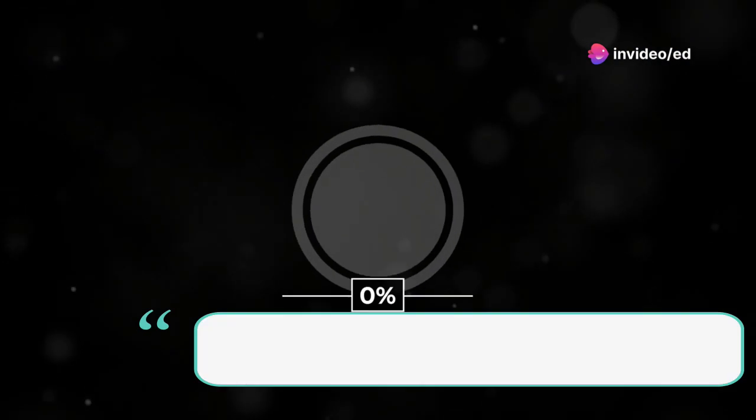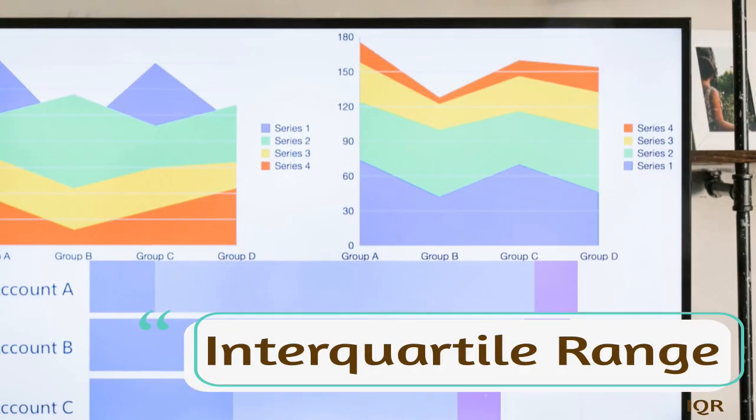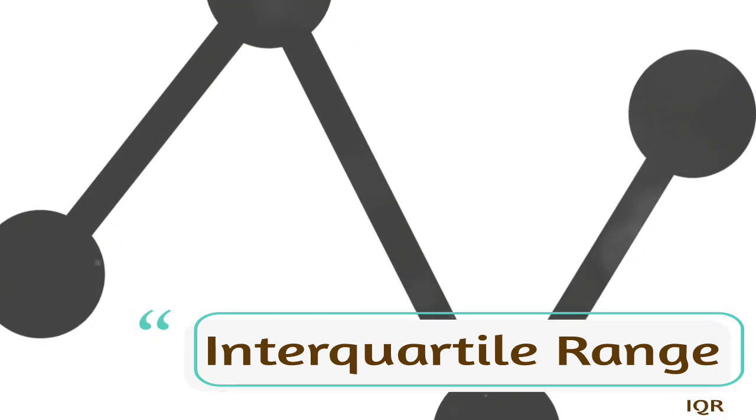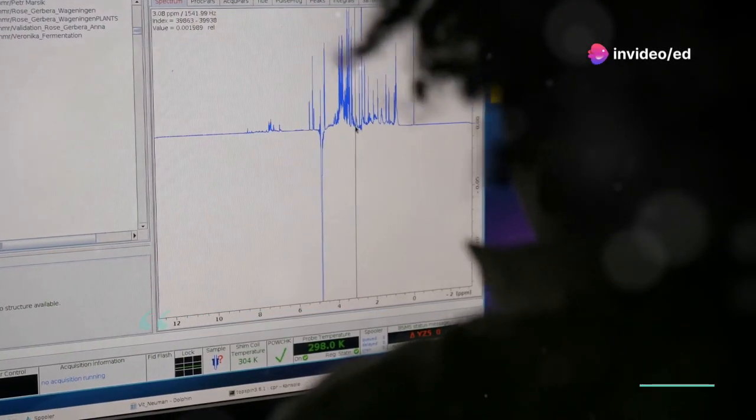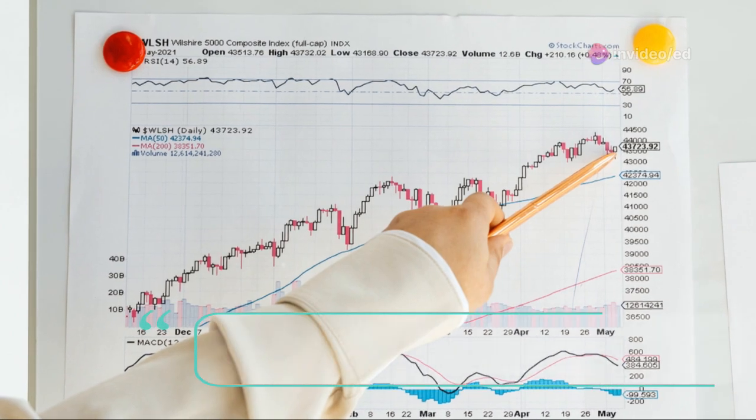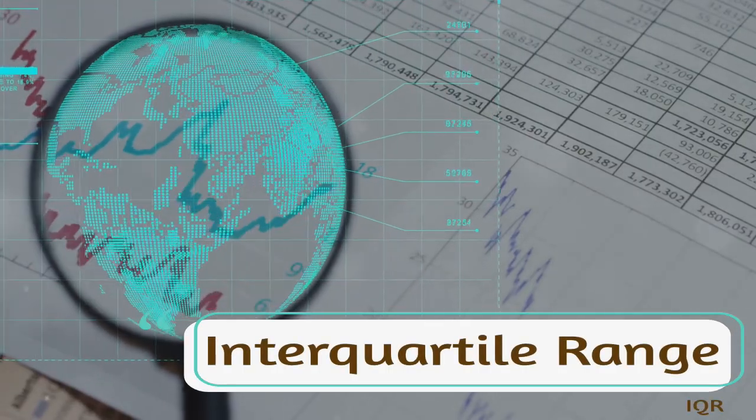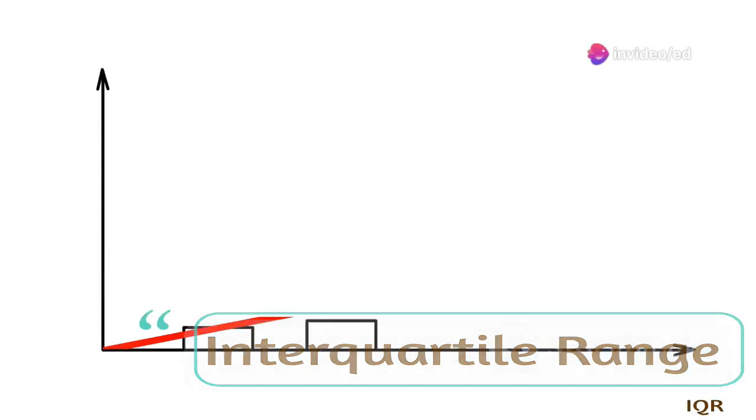Next is the interquartile range, IQR, which focuses on the middle 50% of the data, calculated as the difference between the 75th percentile, Q3, and the 25th percentile, Q1. For example, in the dataset 2, 4, 6, 8, 10, Q1 is 4 and Q3 is 8, resulting in an IQR of 4. This measure is particularly useful for identifying the spread of the central portion of the data, minimizing the impact of outliers.